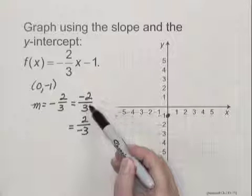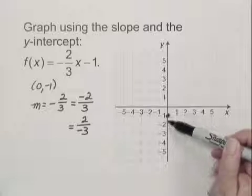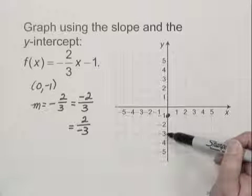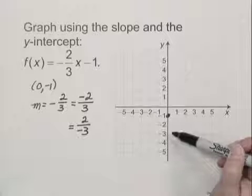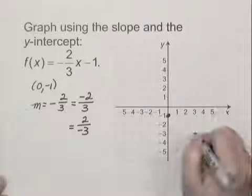Thinking of the slope as negative 2 over 3, we start at the y-intercept, we go down 2 for the negative 2 rise, and we go to the right 3 for the positive 3 run, and we put a dot there.